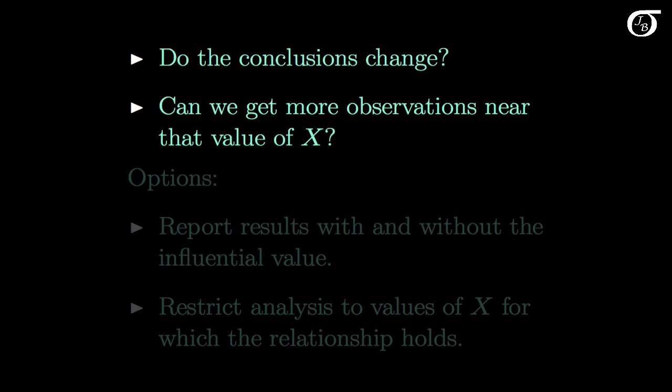Can we get more observations near that value of x? If we can get some more observations near that value of x, then that would reduce the influence of that data point. But it's certainly not always possible to get more observations near that particular value of x.